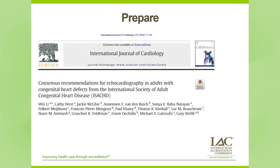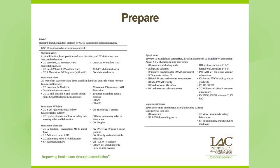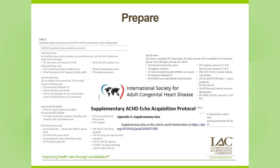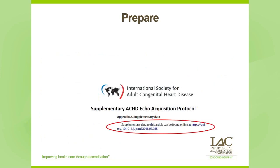There are multiple ways of preparing a checklist for your specific patient or lesion. The previously mentioned paper from the International Society of Adult Congenital Heart Disease has a suggested adult congenital protocol. At the end of the paper, there is supplementary data including a link to 12 disease-specific protocols in Microsoft Word format — easy to print out and add to your binder.